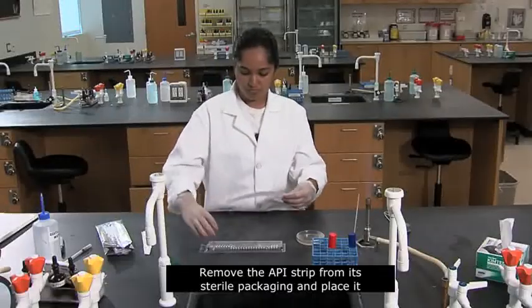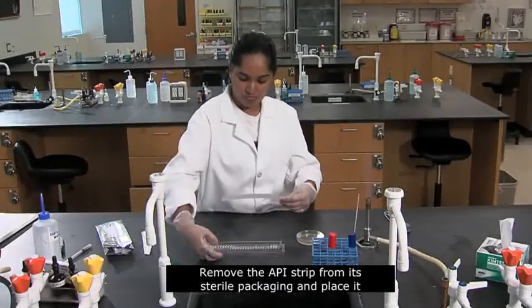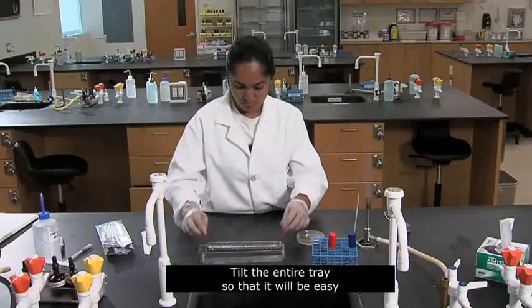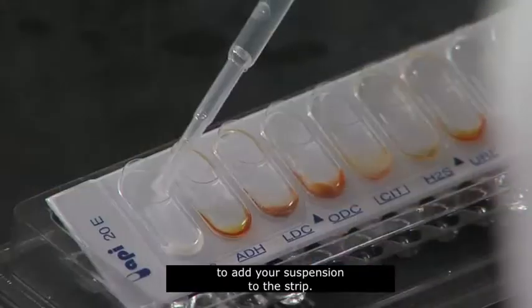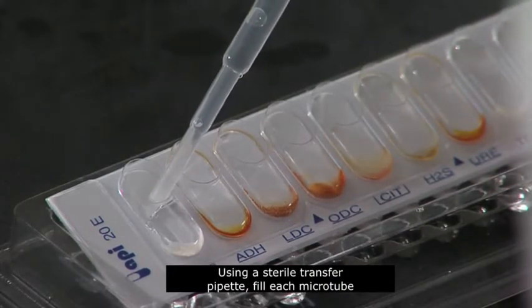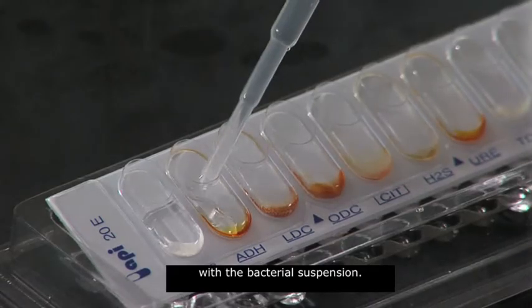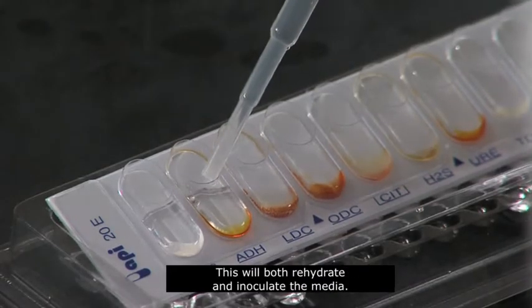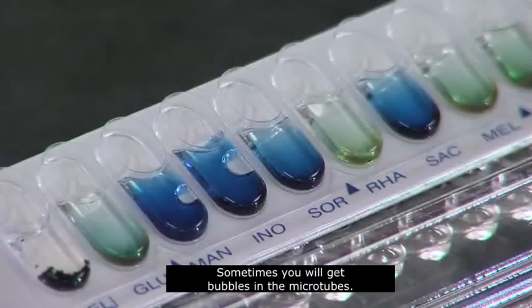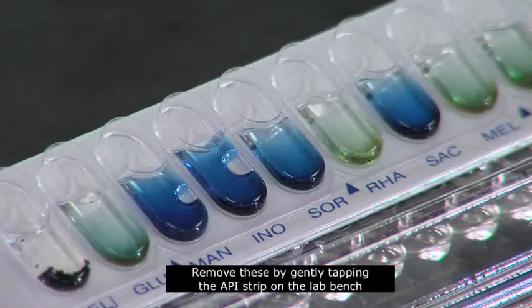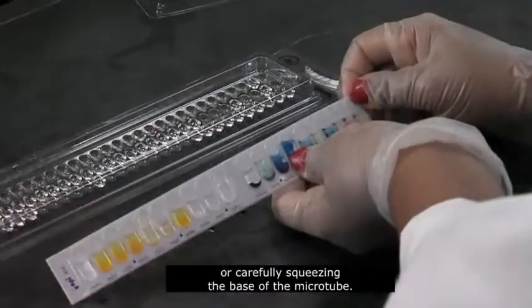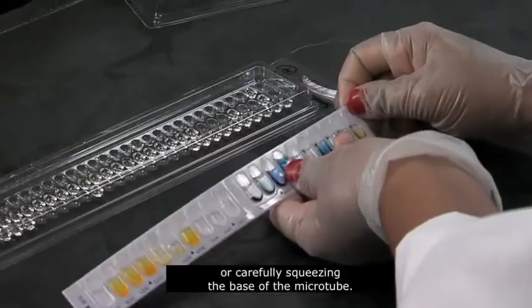Remove the API strip from its sterile packaging and place it in the filled humidity tray. Tilt the entire tray so that it will be easy to add your suspension to the strip. Using a sterile transfer pipette, fill each microtube with the bacterial suspension. This will both rehydrate and inoculate the media. Sometimes you'll get bubbles in the microtubes. Remove these by gently tapping the API strip on the lab bench or carefully squeezing the base of the microtube.